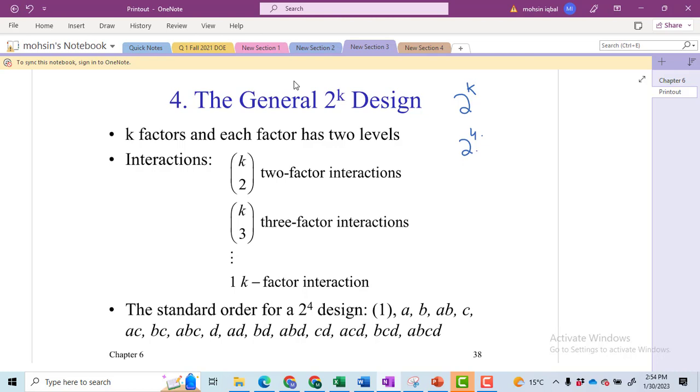First of all, I will check that how many observations we have for the main effect. So we will get 4 main effects A, B, C, D because we have 4 factors.